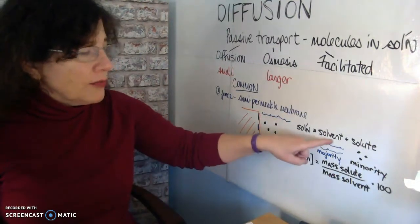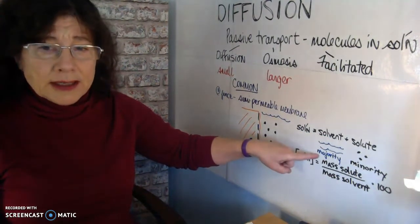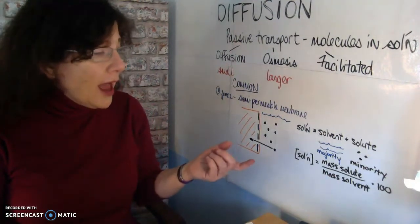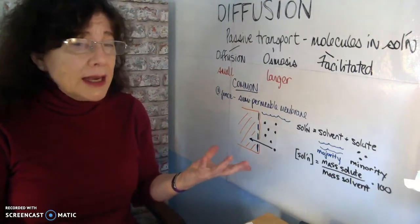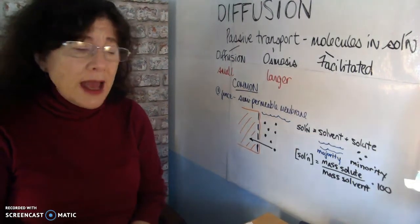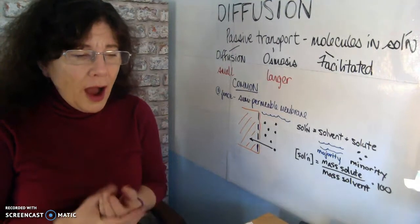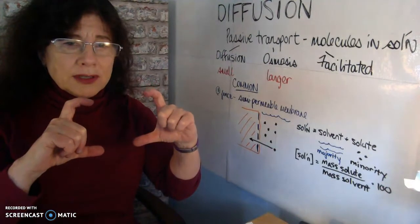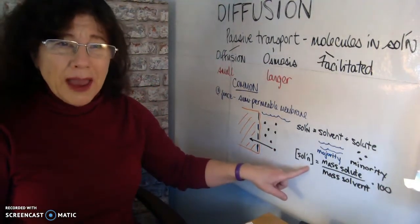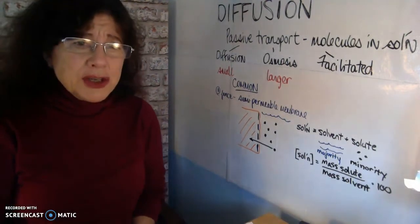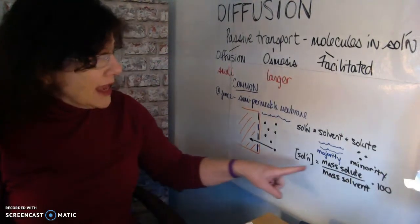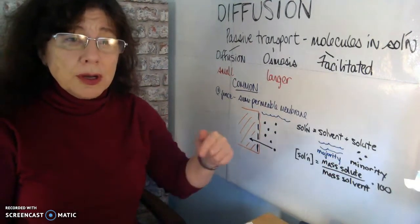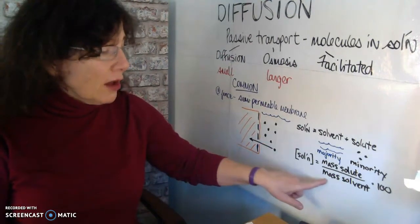A solution is a solvent — which is the majority of the molecules, the water in our case — and a solute, which are the minority molecules. We could have one solute, two solutes, or many solutes in a solution, but the majority of molecules are always going to be the solvent. The molecule we're going to use in Activity 2 is sugar. Sugar is the solute, over the mass of the solvent, which is water.